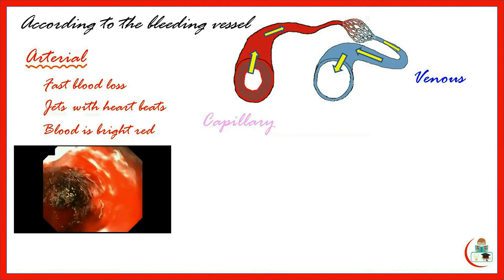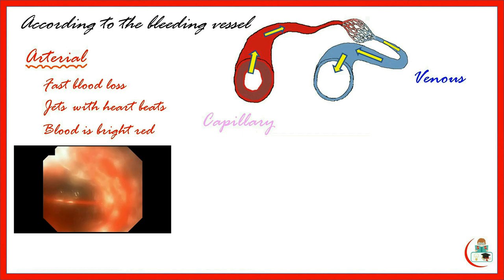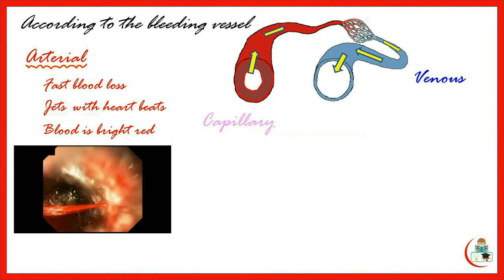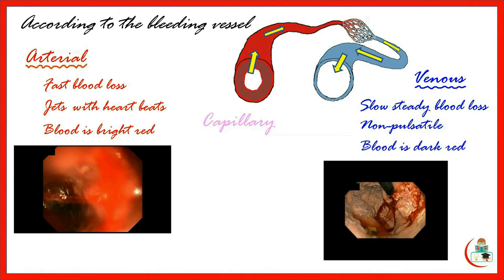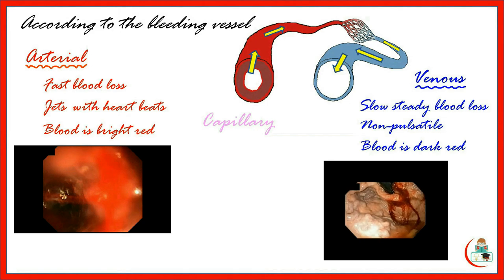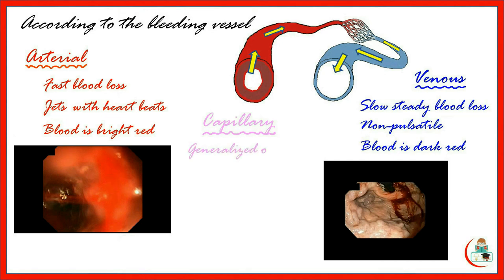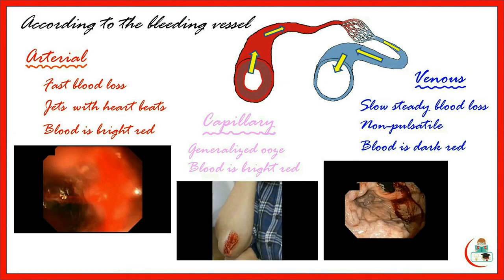Control of arterial bleeding is not an easy job and may necessitate proximal tourniquet. As regards venous bleeding, the blood flow is slow and steady. It is not pulsatile and the blood is dark red in color. Venous bleeding is easily controlled by elevation of the injured part or by application of a simple bandage. Capillary bleeding is just an ooze of blood, bright red in color, and is usually self-limited unless the patient is hemophilic, in which case it may cause serious bleeding.